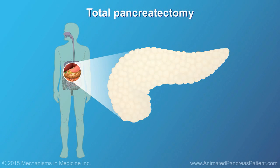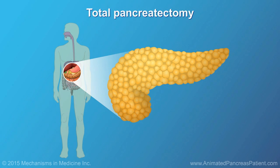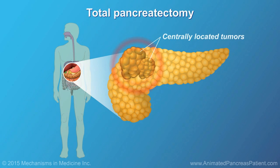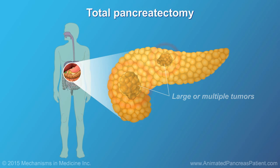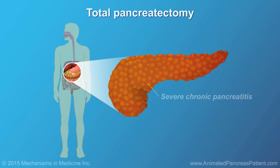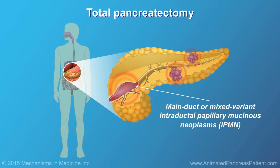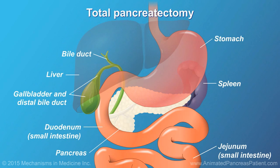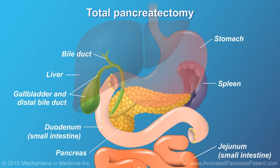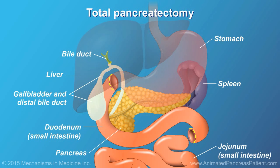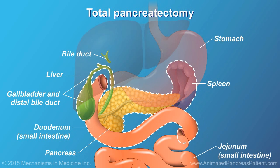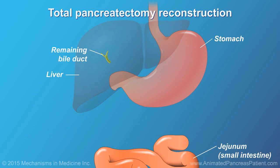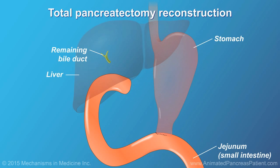A total pancreatectomy is used when the entire pancreas must be removed. In a total pancreatectomy, the entire pancreas is removed together with the duodenum, the gallbladder and part of the bile duct, and the spleen. To complete the procedure, the remaining bile duct and the stomach are reconnected to the small intestine.